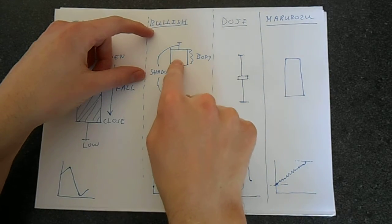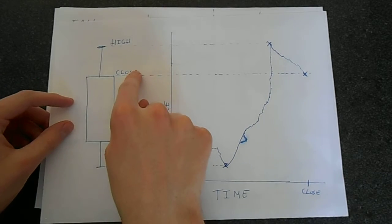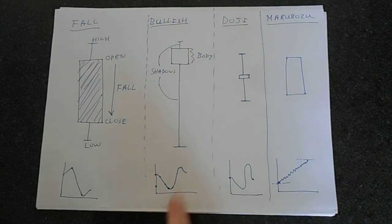This one isn't shaded in, so what does that tell us? Well that tells us we've got a situation like this, where the open is at the bottom and the close is at the top, so that means the stock has went up slightly.